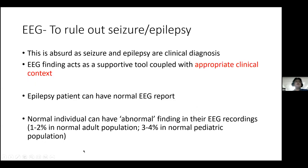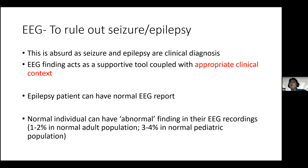A common but problematic indication is 'to rule out seizure and epilepsy.' This is a bit absurd because seizure and epilepsy are clinical diagnoses — EEG findings act as supportive evidence in the appropriate clinical context. An epilepsy patient can have a normal EEG report, meaning a normal EEG does not rule out seizure or epilepsy. You still have to go back to the clinical aspect.